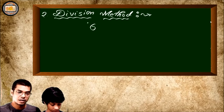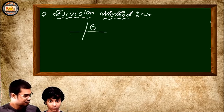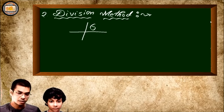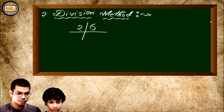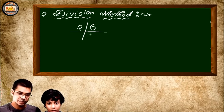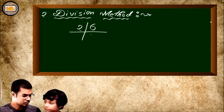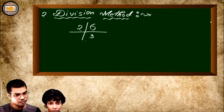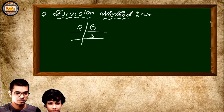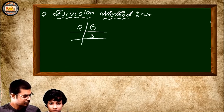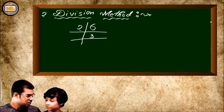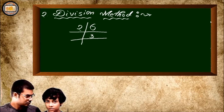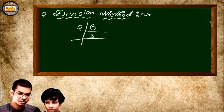In the division method, what is the least possible prime number by which we can divide 6? It is 2. When we divide 6 by 2 we get 3. Now what is the least possible prime number by which we can divide 3? Three is itself a prime number, so the only prime we can divide 3 by is 3 itself, giving us 1.